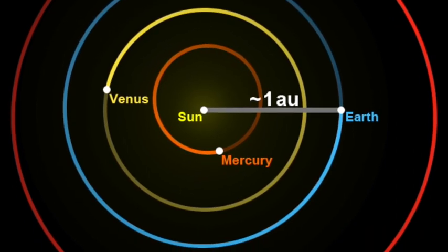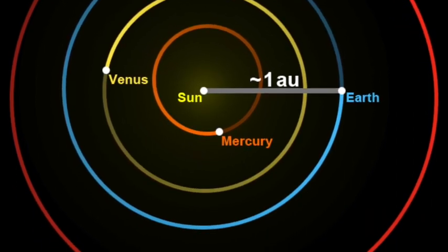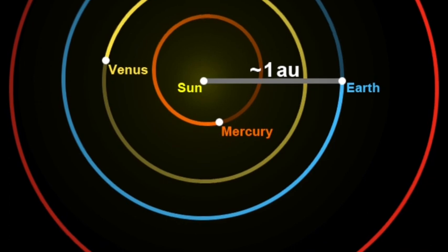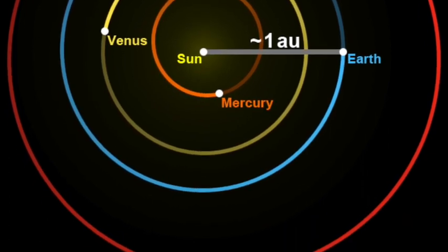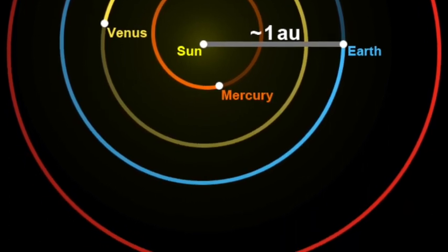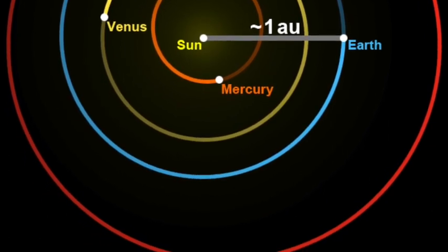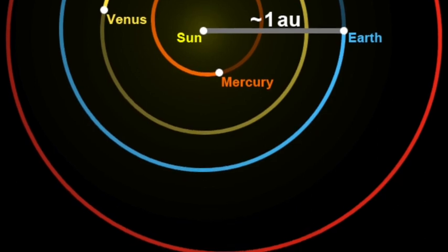Beyond the solar system, astronomical units again require so many of those that it just becomes awkward to use them for distances to the next star. So we're going to use the term light year. By the end of this mini lecture, I want you to be comfortable with some of the basic units of astronomy.